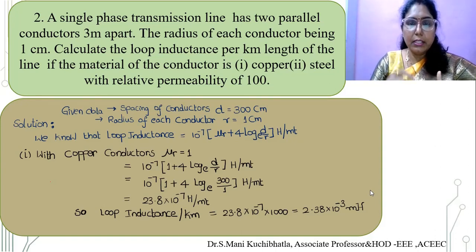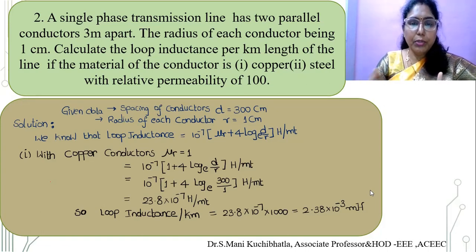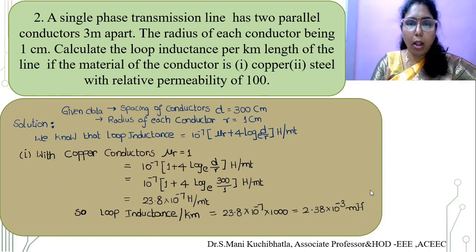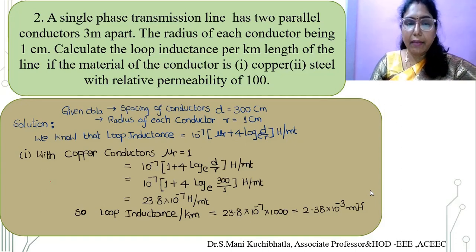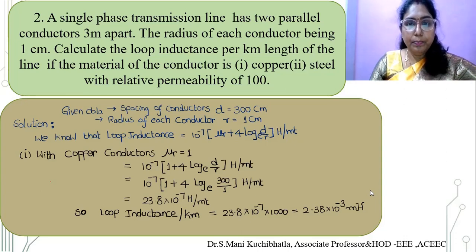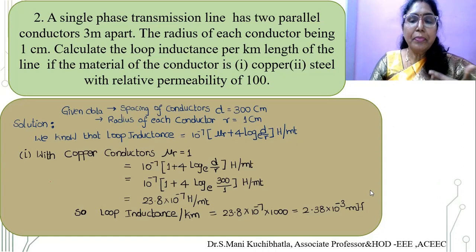First we go with the copper conductors where the relative permeability mu_r is 1. Substituting: 10 to the power minus 7 into (1 plus 4 log to the base e of 300/1) henries per meter, where d is 300 and r is 1 centimeter. After simplifying we get 23.8 into 10 to the power minus 7 henries per meter. Multiplying by 1000 for per kilometer length, we get 2.38 millihenries.